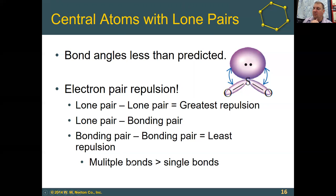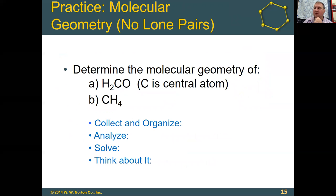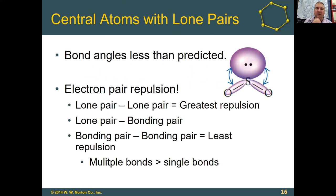In the case where you have multiple bonds, multiple bonds will be a little bit greater in their repulsion than a single bond, but not as strong as a lone pair. Going back to H2CO, we predict 120 degrees around the carbon, but the C=O double bond is going to have slightly greater repulsion on the two hydrogens. So the HCH bond angle is probably more like 119 degrees — still about 120, not a huge difference. In reality, most of these molecules don't show too big a difference in how they behave or react.